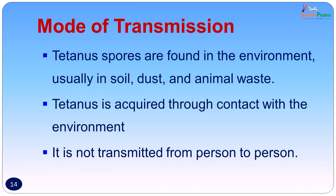How does one get tetanus? Tetanus spores are found in the environment, usually in soil, dust, and animal waste, and are acquired through contact with this environment. Roadside injuries contaminated with soil are likely to contain spores of Clostridium tetani. It is never spread from person to person.